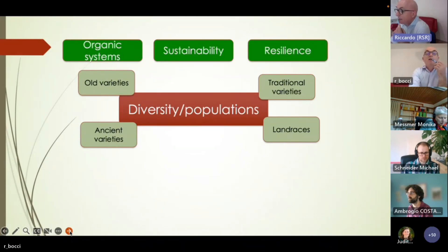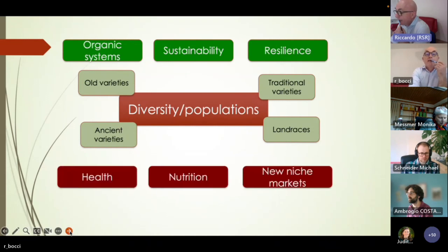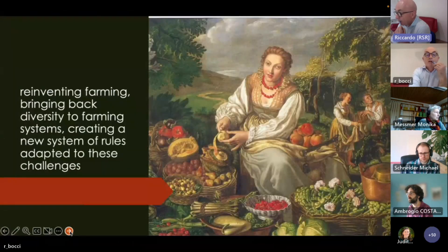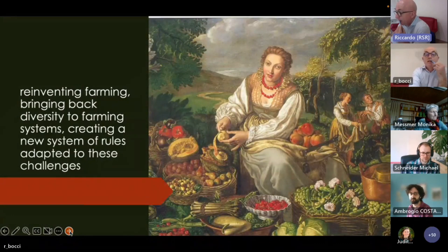Diversity and populations are relevant for organic systems, sustainability, and resilience. They could also be important for citizens — for health, nutrition — and for keeping evolutionary processes in place. The challenge is to reinvent farming by bringing back diversity.